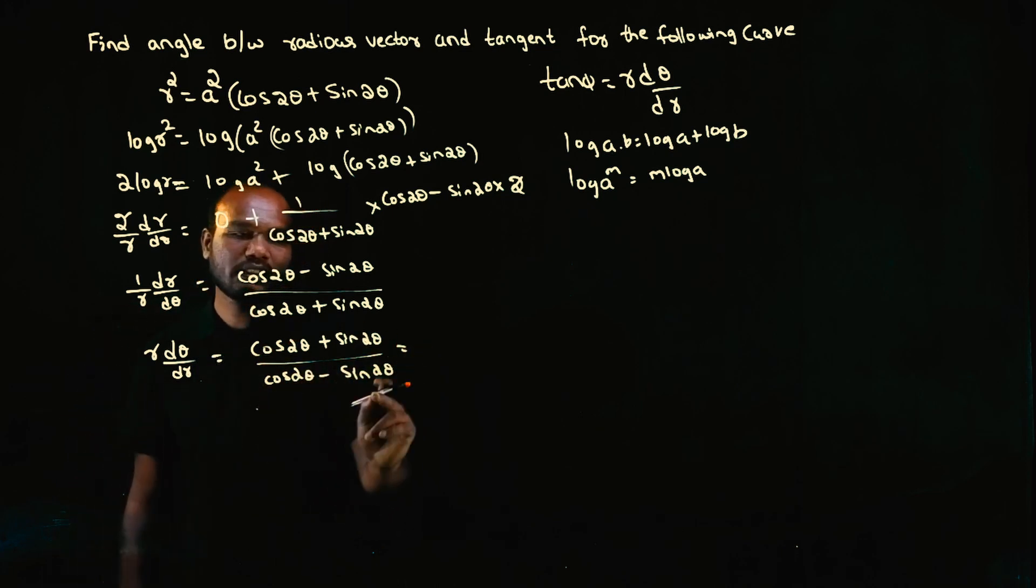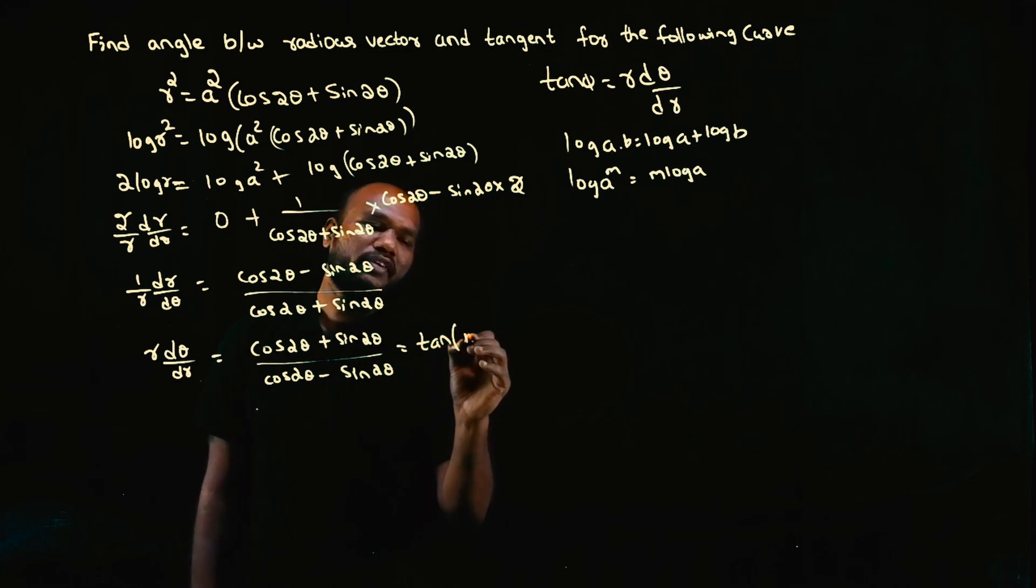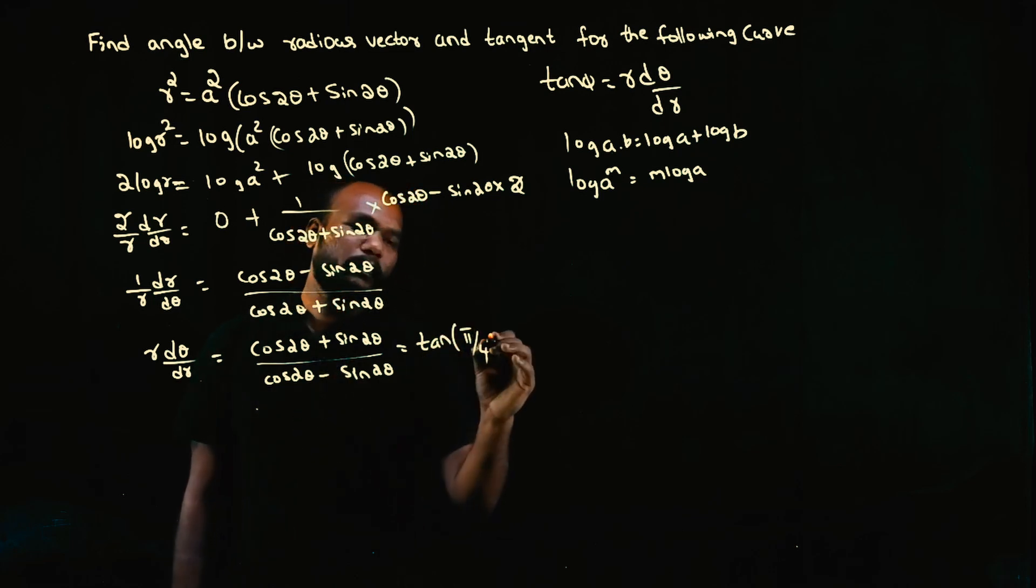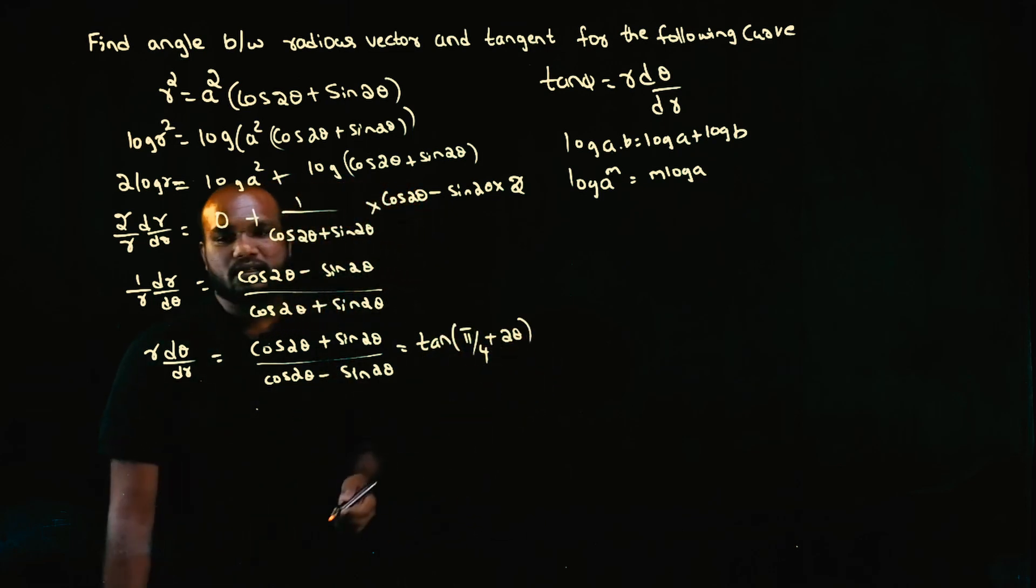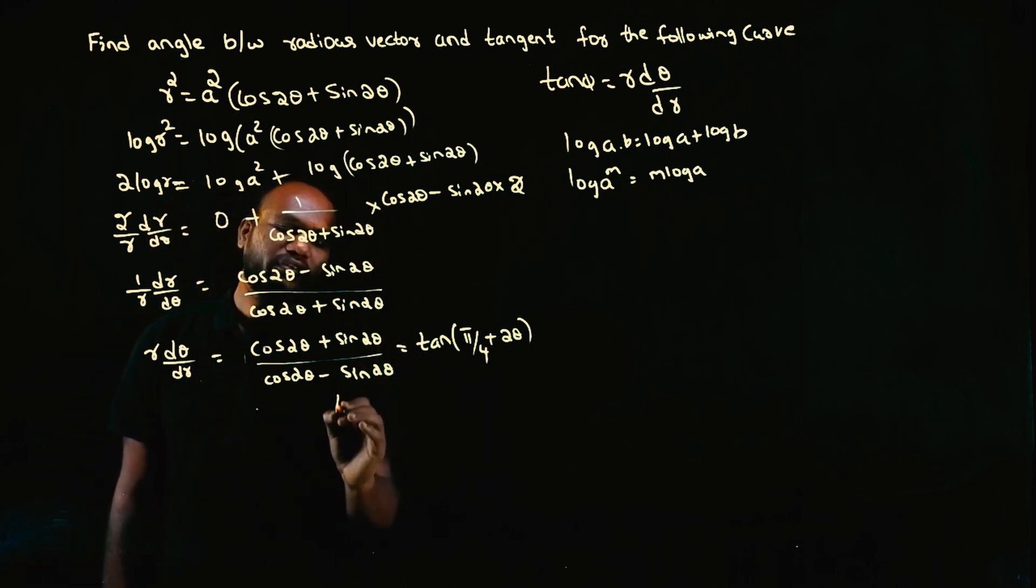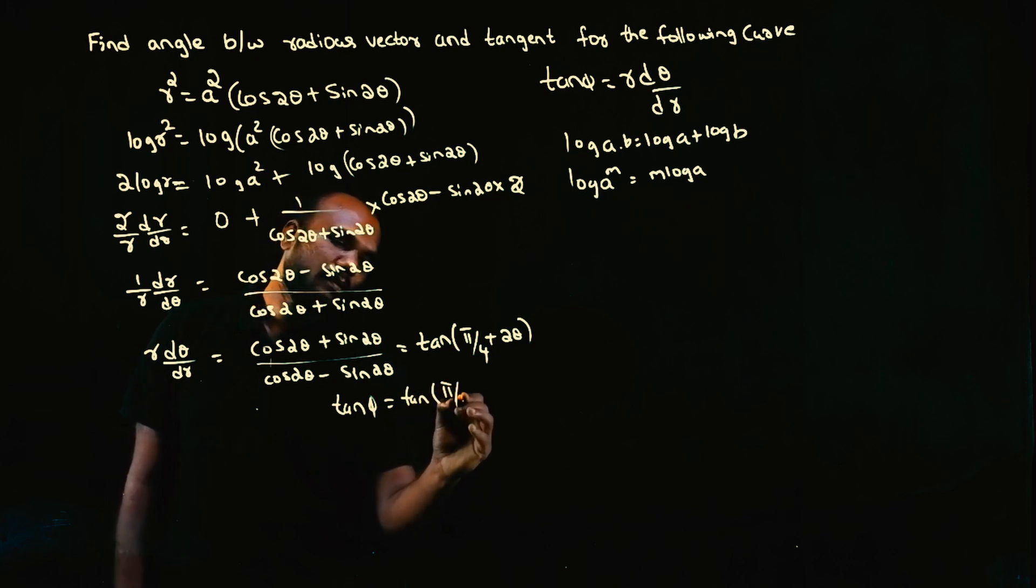This becomes tan of π/4 plus 2θ. r dθ/dr is tan phi, so tan phi equals tan(π/4 + 2θ).